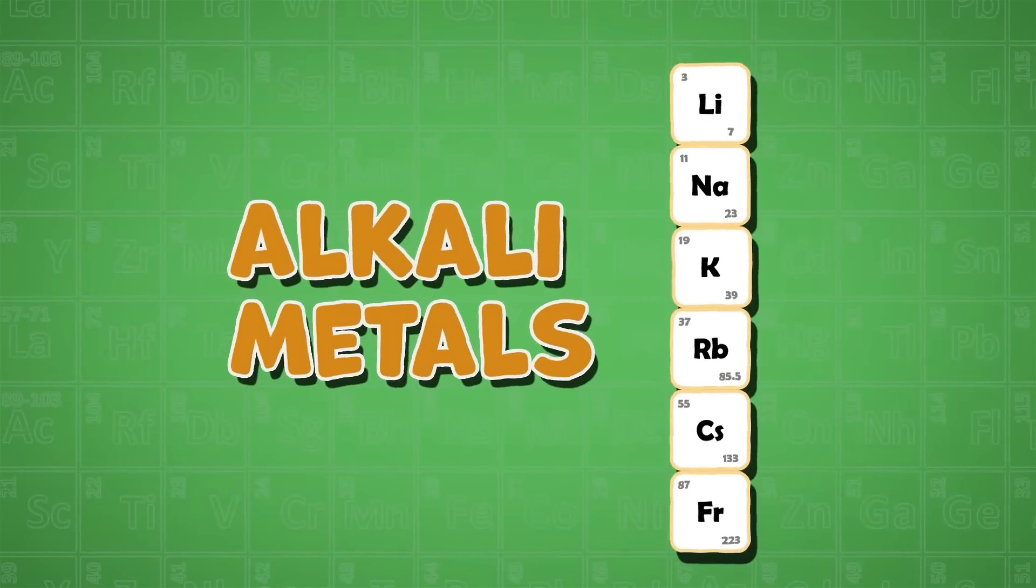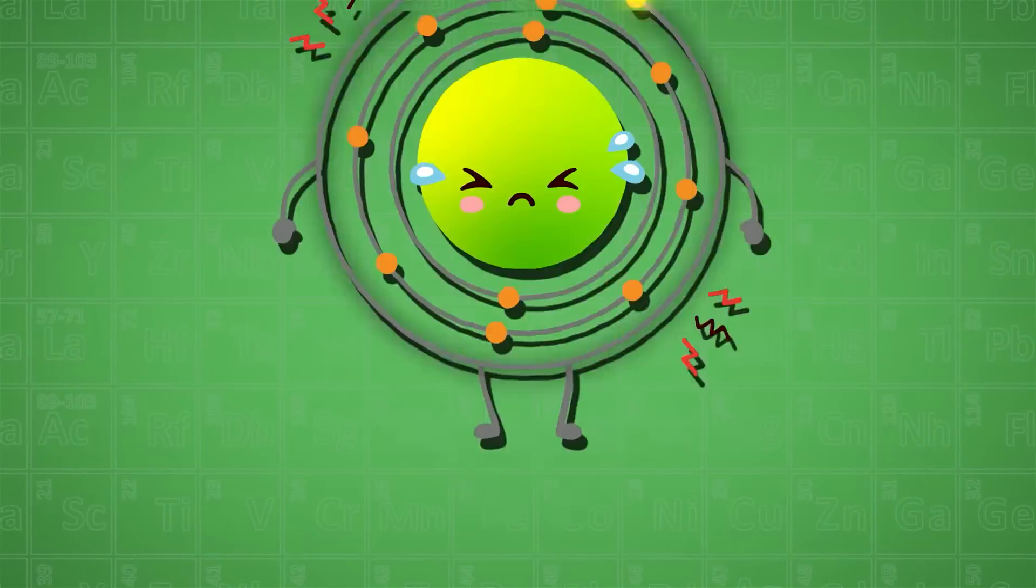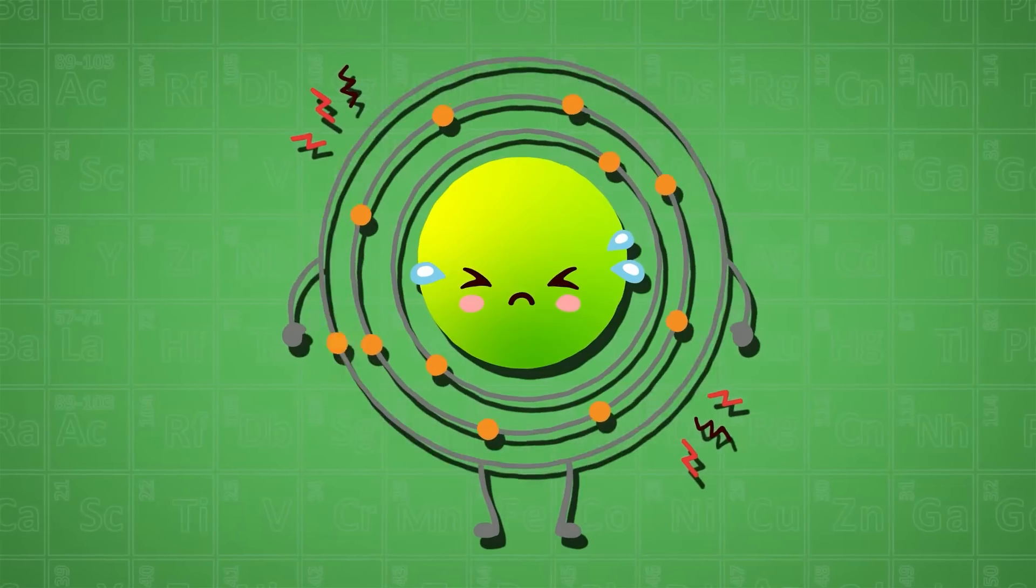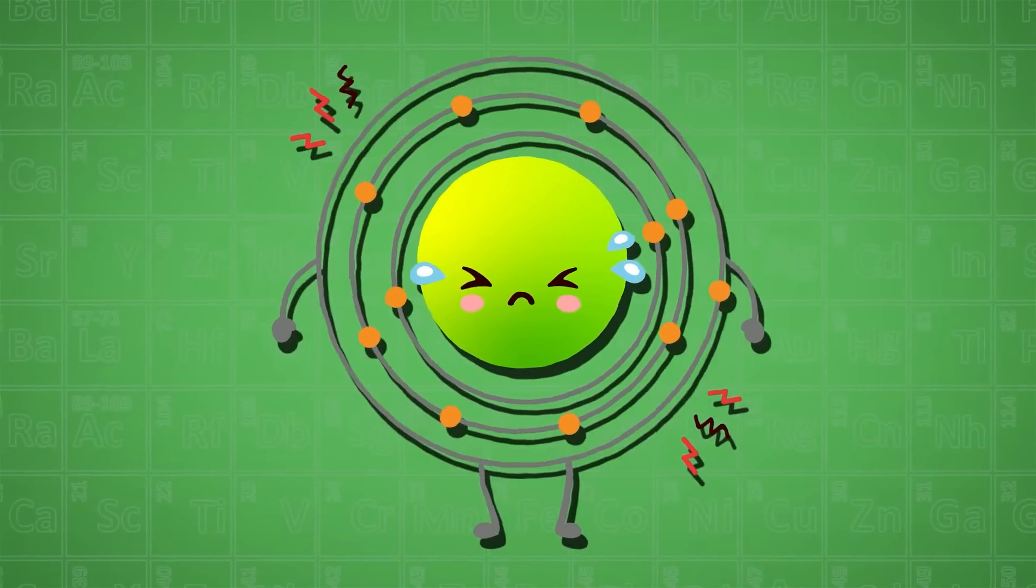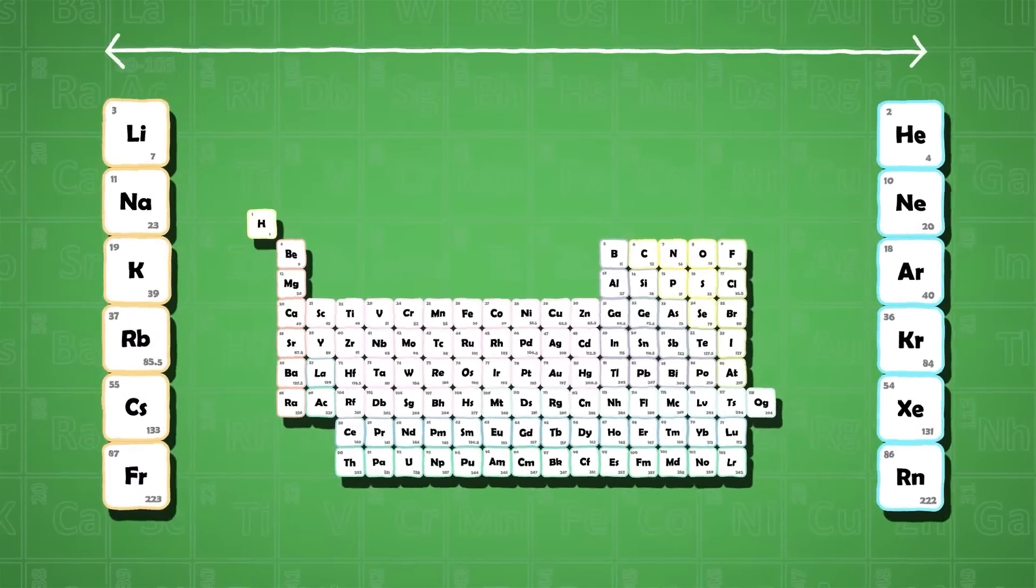The alkali metals are on the first column of the periodic table. They all have only one electron in their outer shell and are very reactive. Noble gases and alkali metals are opposites.